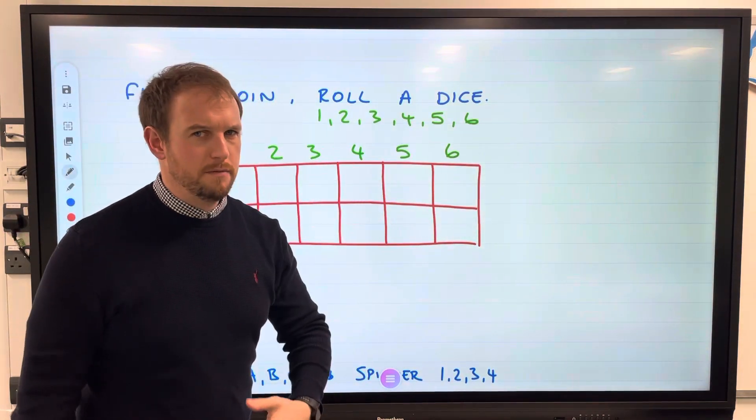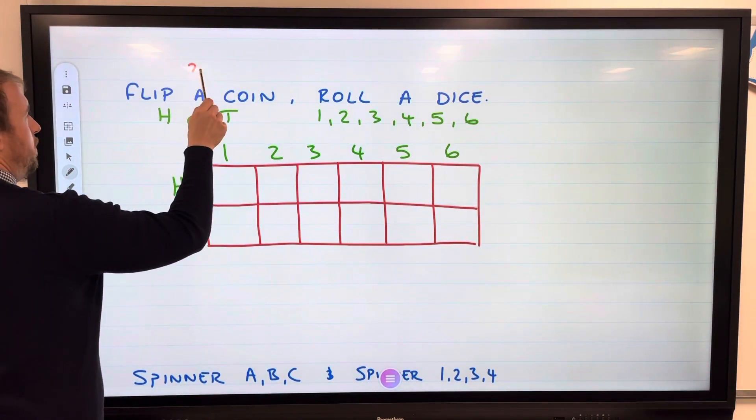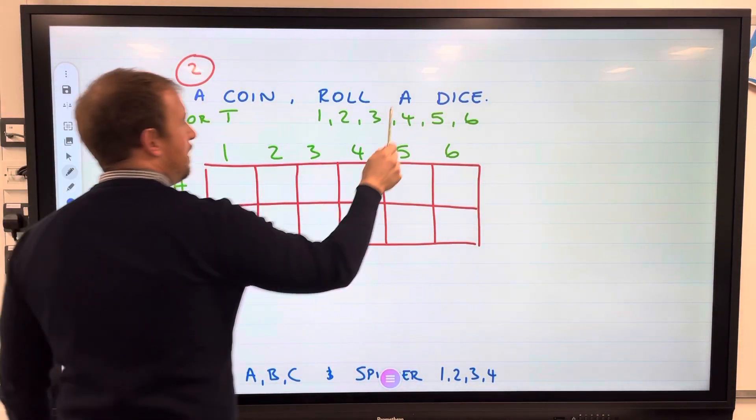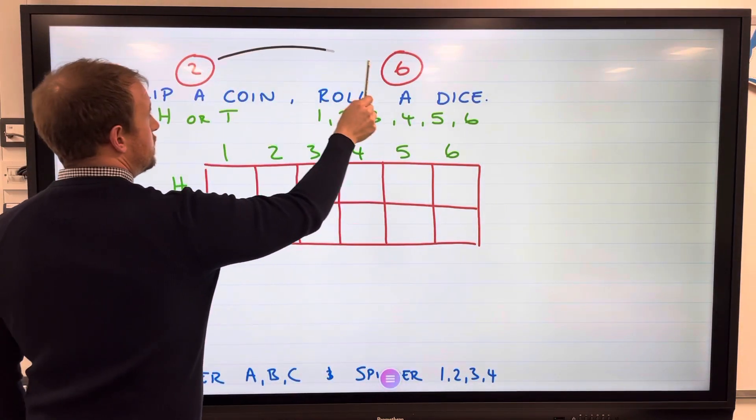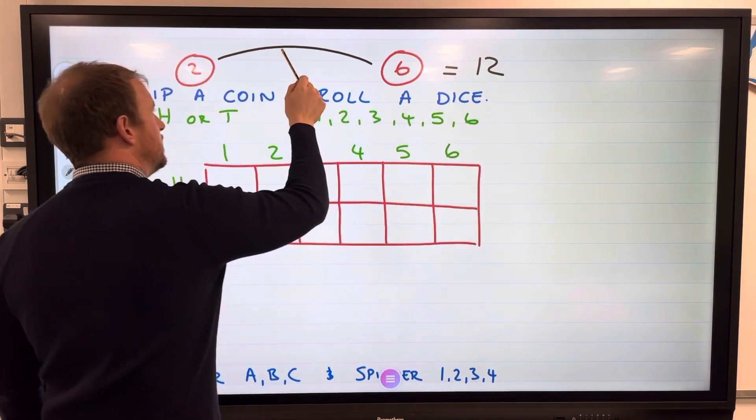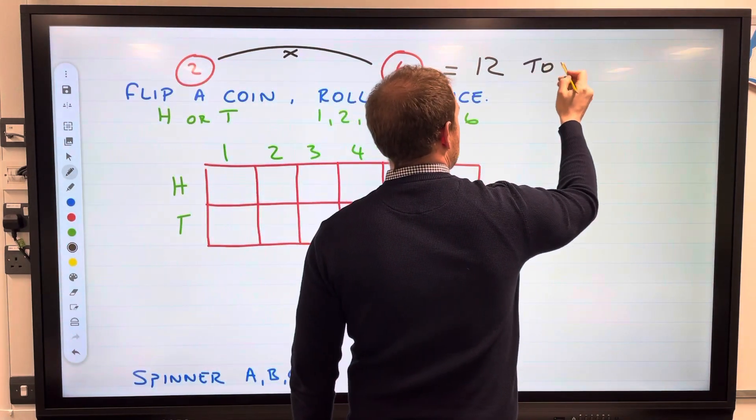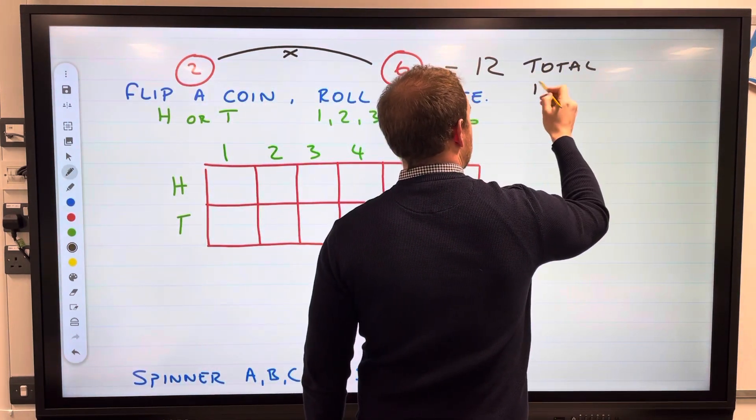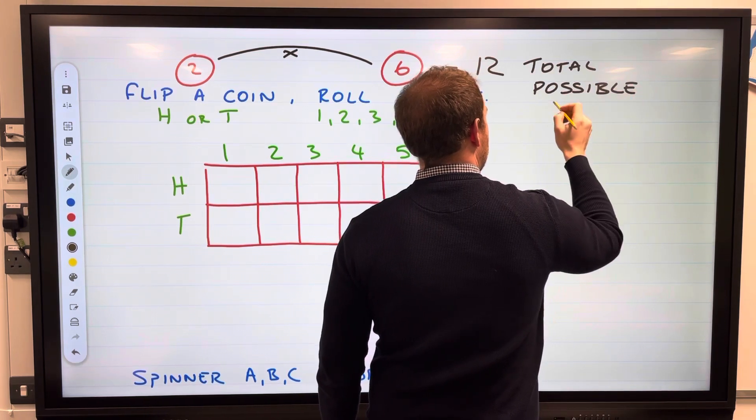We're going to fill in these boxes. How many boxes do we have? We have twelve. We have two possible outcomes here and six possible outcomes here. What have we done to these two to make twelve? We've timed them together. That's how many total possible outcomes.